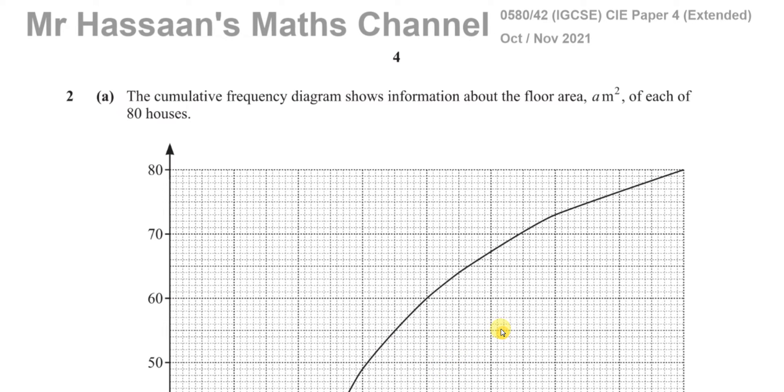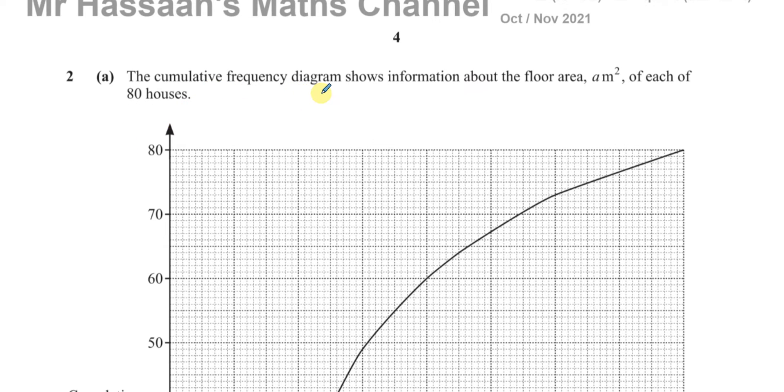Okay, welcome back. This is Mr. Hassan's Math Channel. I'm now answering question number two from the October 2021 CIE Cambridge International GCSE, IGCSE paper, paper four, variant two. This question is about statistics, the first part about cumulative frequency. There is a cumulative frequency diagram shown, which gives information about the floor area, A in meters squared, of each of 80 houses.